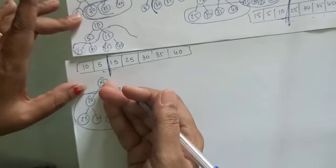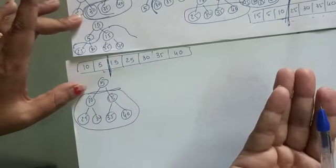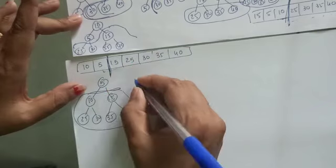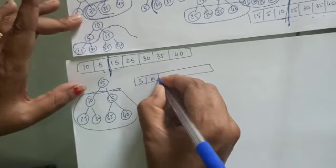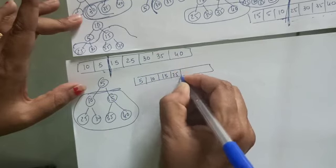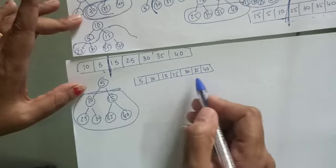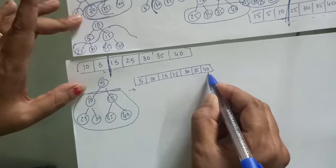And now this is the only node, so we need not bother about comparing left child and right child or comparing it with the ancestor. So now my final array representation is 5, 10, 15, 25, 30, 35, and 40.